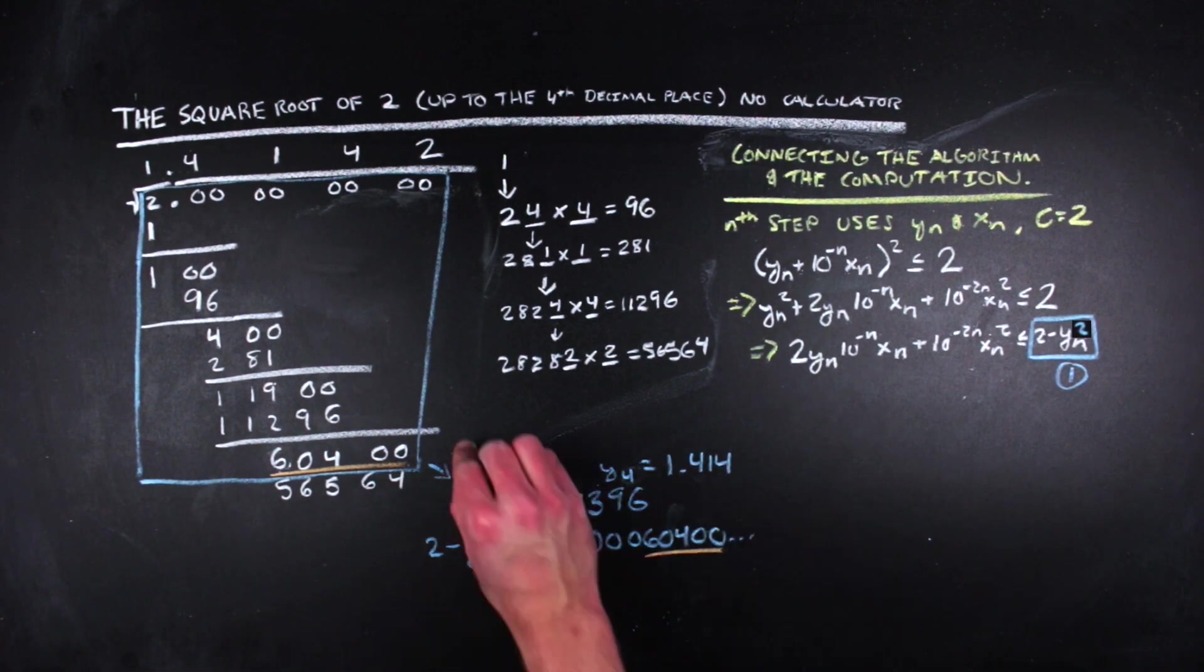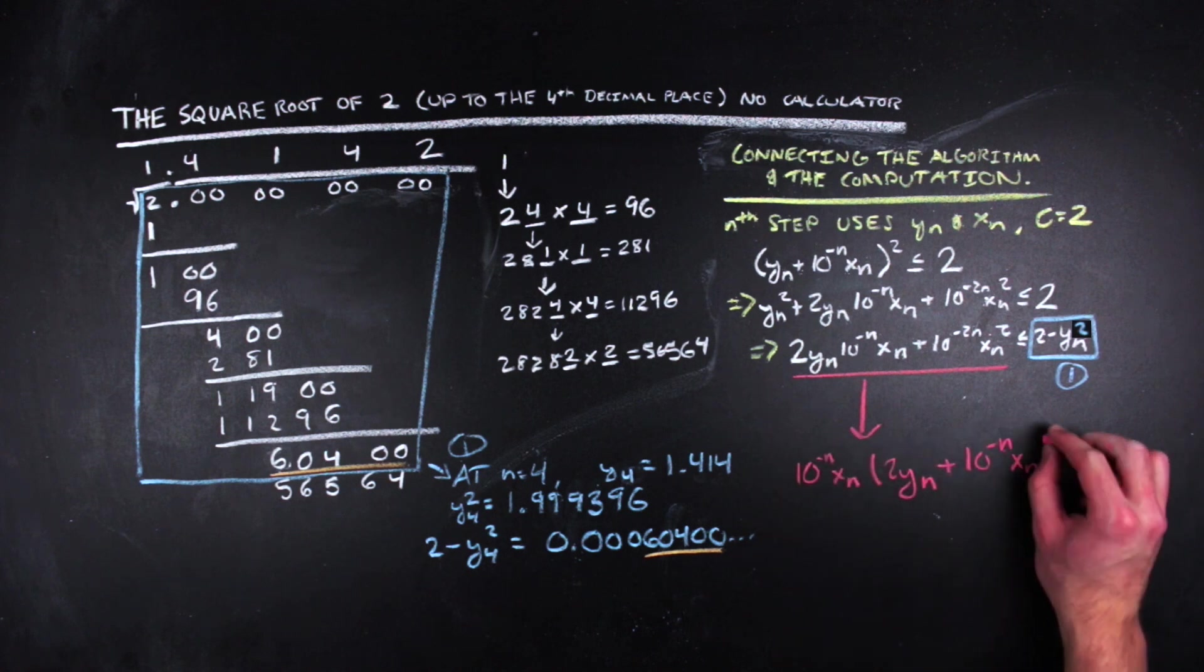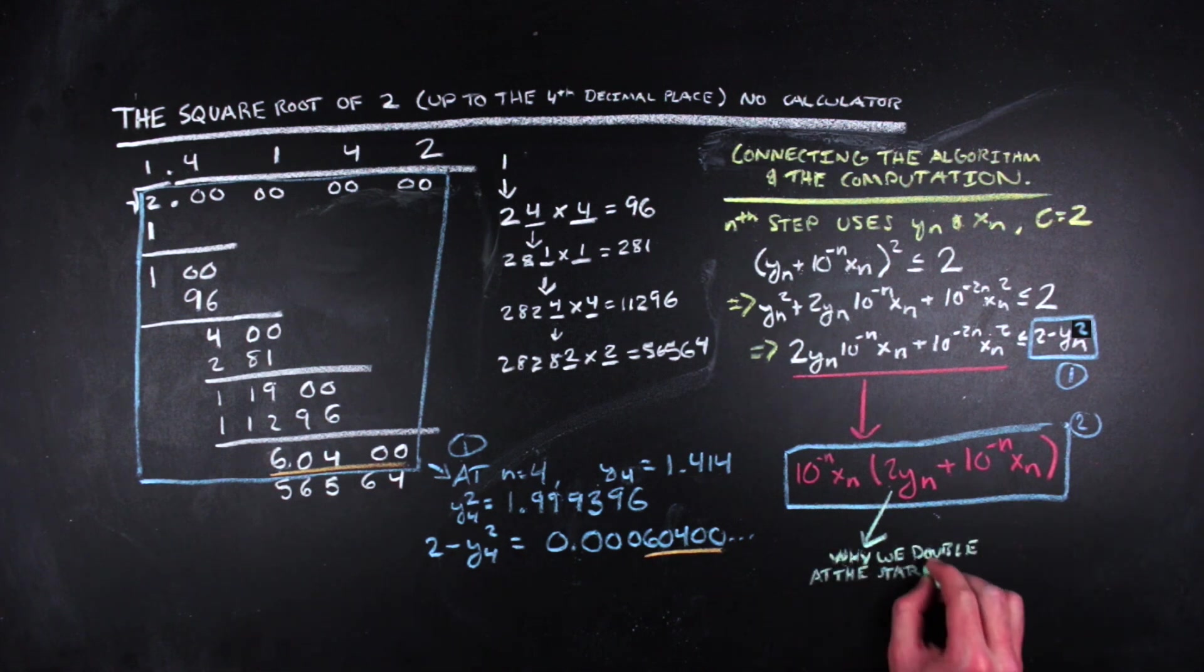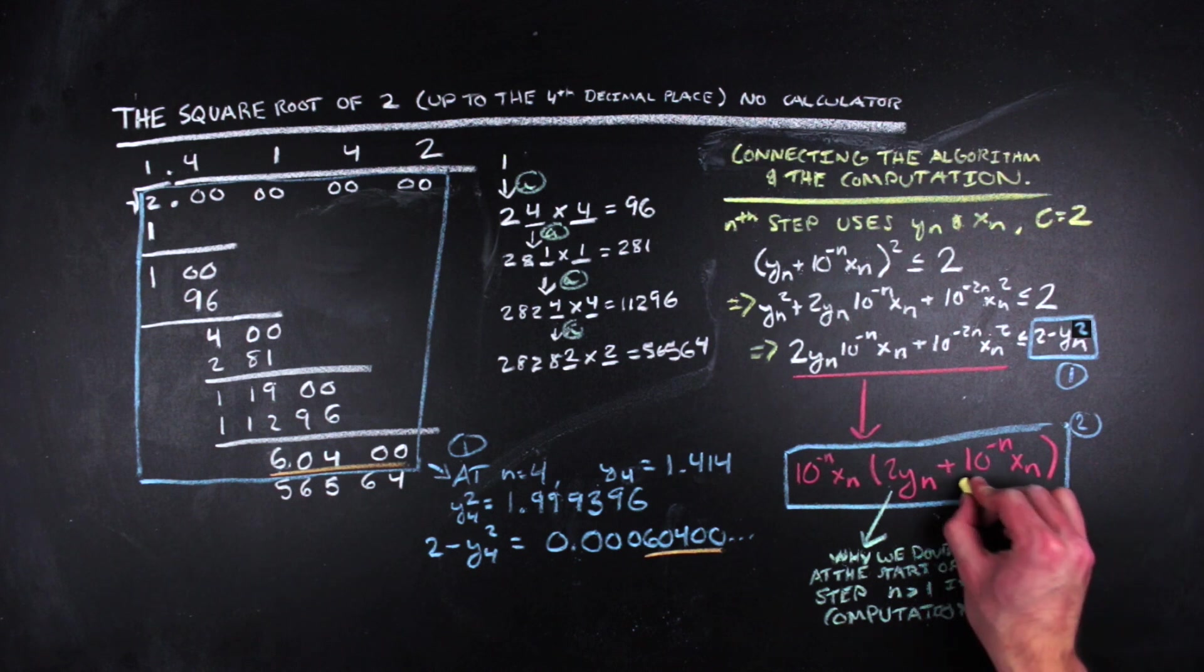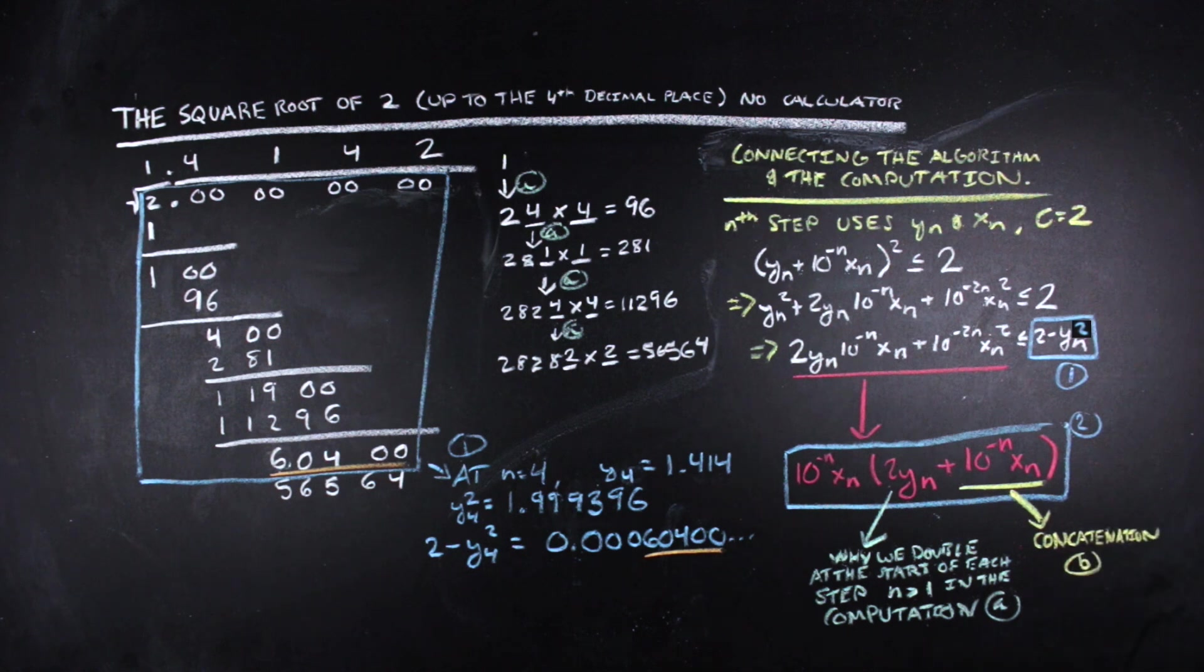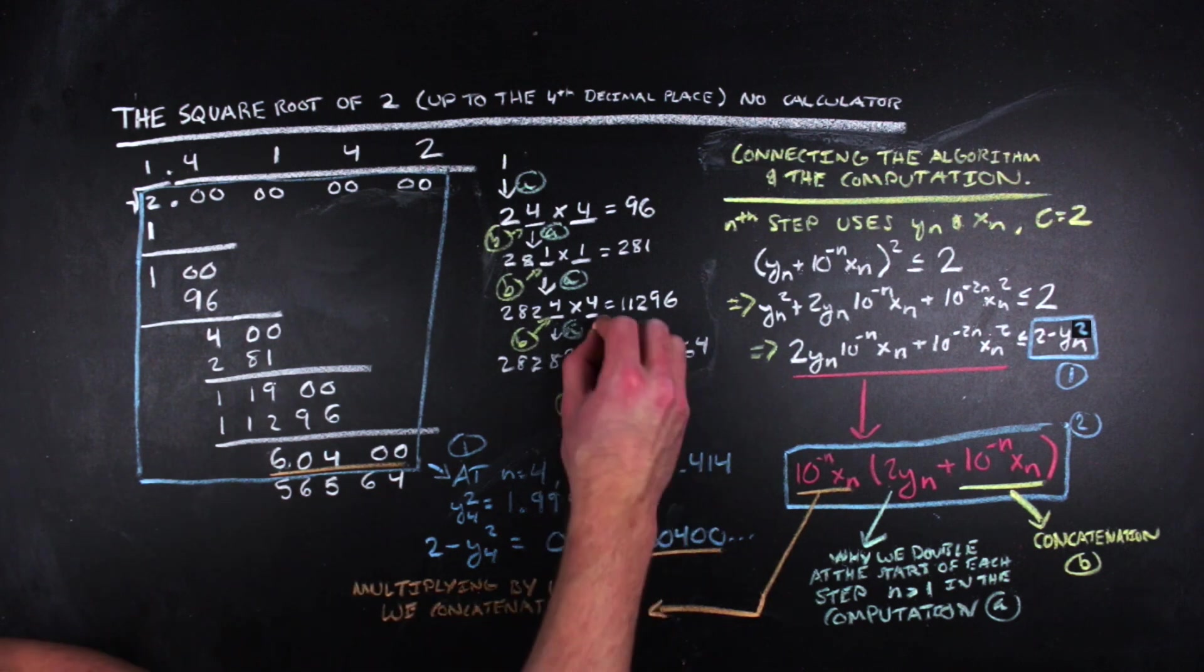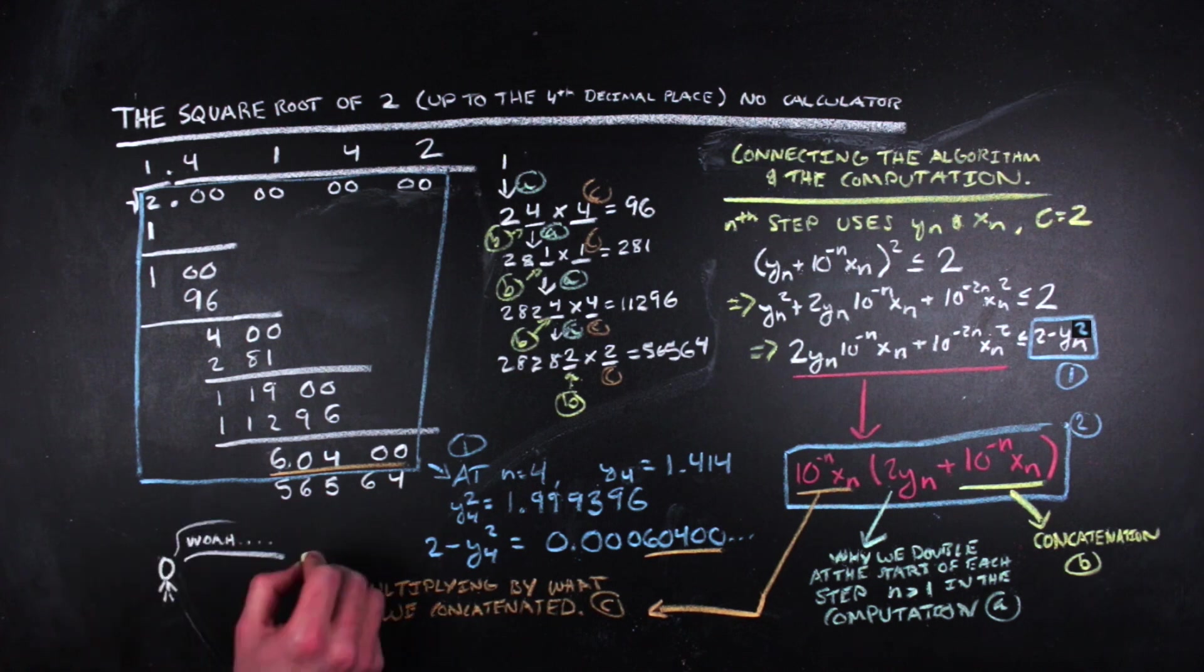But what about the bookkeeping? If we look at what's left over after subtracting the y sub n squared from both sides, there is a 2 that should shout and point at the weird doubling and concatenating thing that happens in the bookkeeping process. With a small factoring adjustment to this expression here, we can see that the doubling comes from the 2 y sub n term. The concatenation comes from the 10 to the negative n x sub n term as that term will always be one decimal point further out than what is in y sub n at each step in the construction. And the multiplication by what we concatenated is the last 10 to the negative n x sub n term. The 10 to the negative 2 n that we saw earlier in the inequality also points out why we adjoin two zeros after the decimal point for each value after the decimal point we wish to calculate.